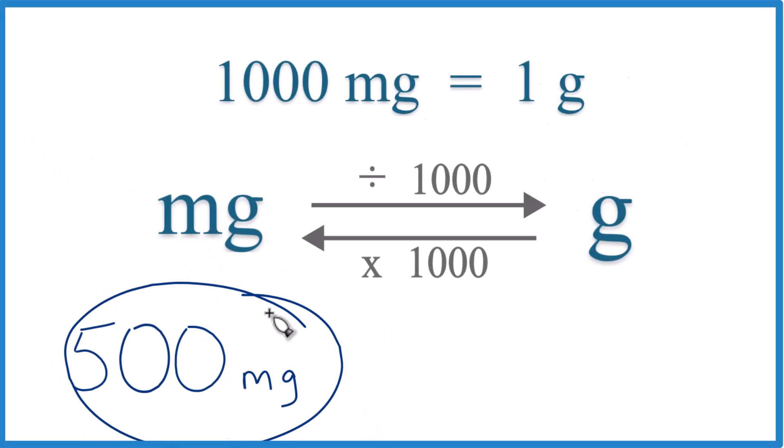Let's convert 500 milligrams to grams. So there are 1,000 milligrams in 1 gram. 1,000 milligrams equals 1 gram, or 1 gram equals 1,000 milligrams.